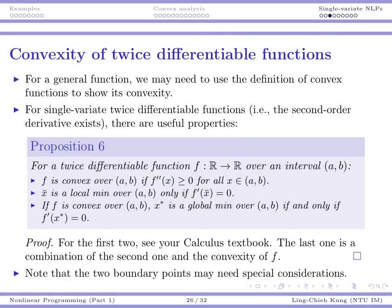One thing to keep in mind: local and global minima can sometimes appear at the boundaries. For single-variable problems, boundaries are just the two endpoints of an interval. That's why we focus on open intervals — we exclude the two endpoints. If we include them, we typically need to investigate whether the endpoints are candidates for local or global minima. We'll see examples of this later.